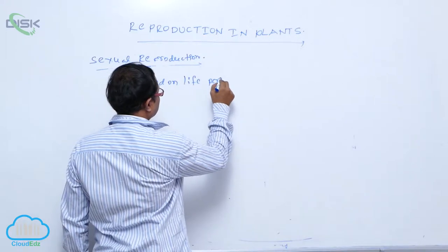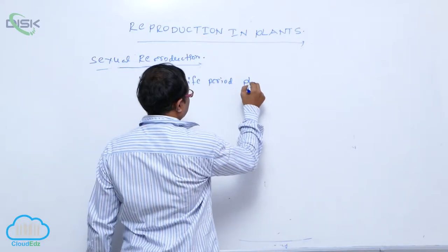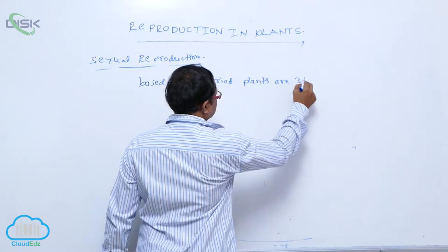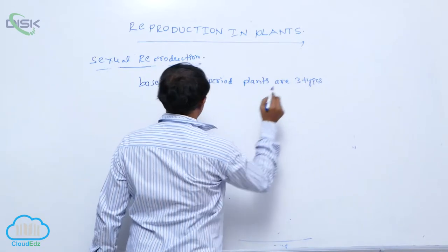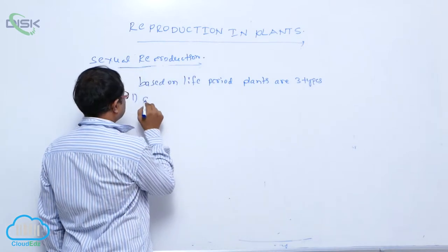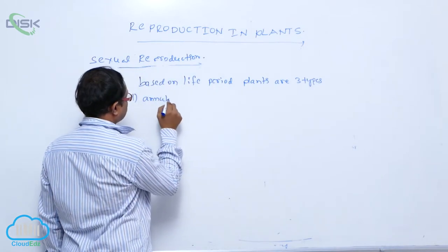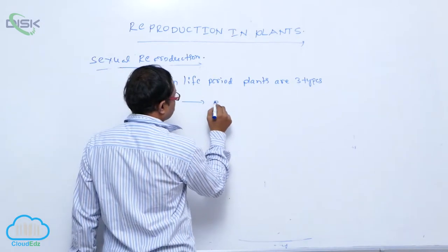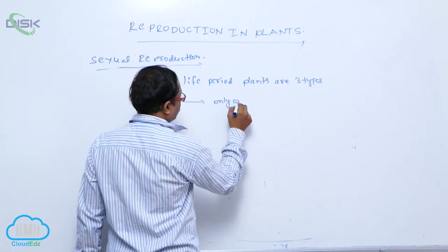Based on life period, plants are three types. First one is annuals. Annuals can live only one year.